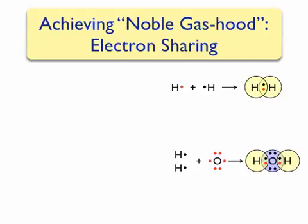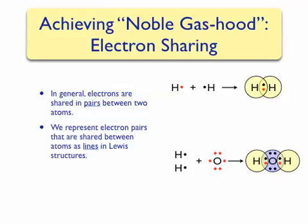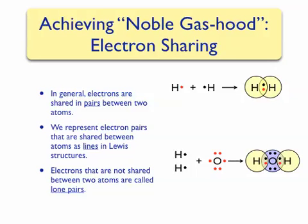We've seen in both examples that generally electrons are shared in pairs between two atoms. We can represent these shared electron pairs as lines in Lewis structures. The electrons that are not shared between atoms are called lone pairs, since they appear exclusively on one atom. We can replace the shared electrons in our hydrogen molecule and water molecule with lines as shown.